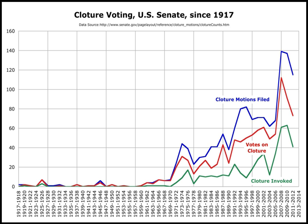Cloture, also UK closure, or informally a guillotine, is a motion or process in parliamentary procedure aimed at bringing debate to a quick end. The cloture procedure originated in the French National Assembly, from which the name is taken.